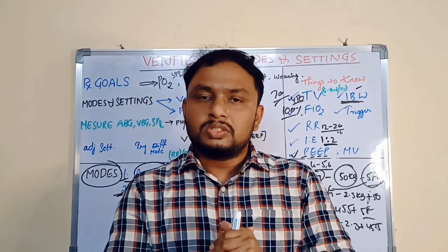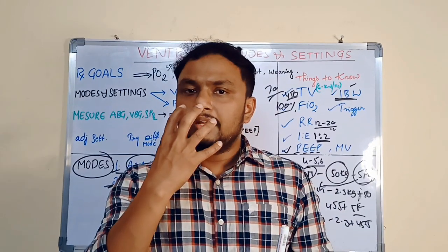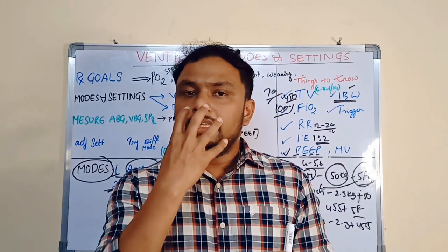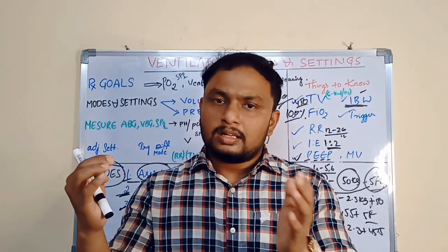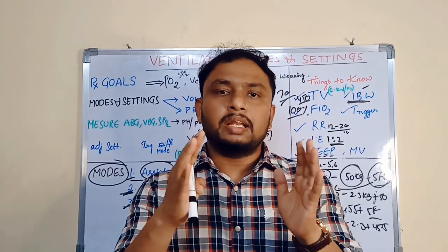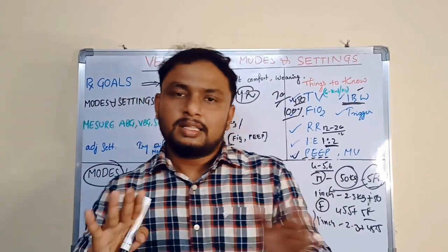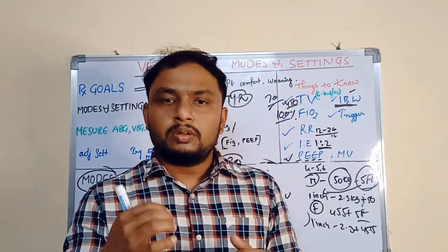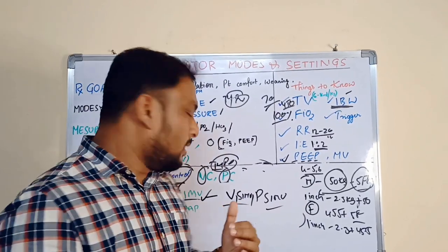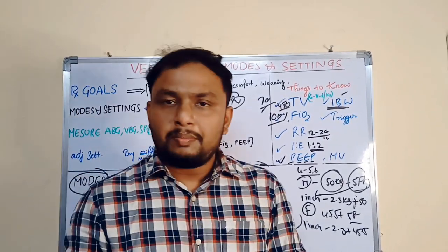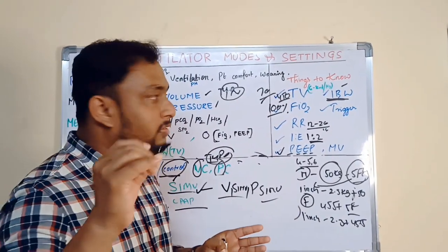If it is NIV — non-invasive — support will be given by an external mask. In NIV, there are different settings or modes, mainly given by CPAP or BiPAP or Duo levels. These are the three types. CPAP — continuous positive airway pressure — will be there. BiPAP and Duo level also. In CPAP or BiPAP, mainly we will focus on the positive airway pressure. We will set the respiratory rate, FiO2, PEEP, and pressure.